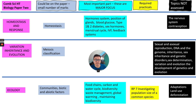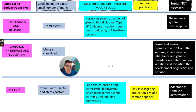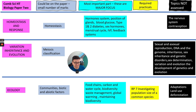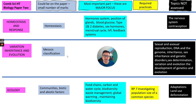For variation, inheritance, and evolution, it's very sparse — there's no major focus. The only things you need to look at are meiosis and classification; the vast majority of that topic is not in there, so it's a very quick topic to revise. For ecology, you have food chains, carbon and water cycles, biodiversity, waste management, global warming, and maintaining biodiversity.